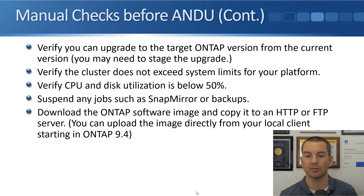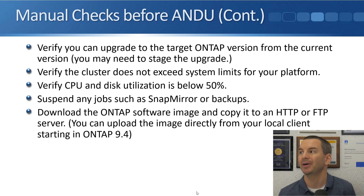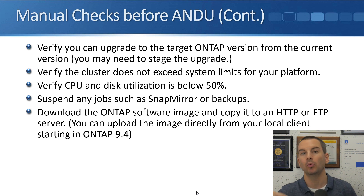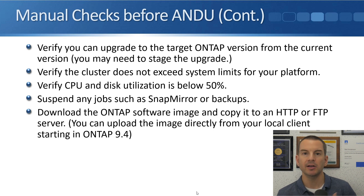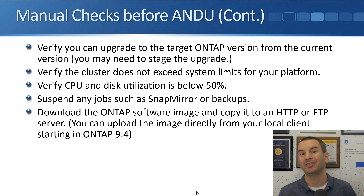Verify the cluster does not exceed system limits for your platform — for example, make sure you don't have too many snapshots. Also verify that the CPU and disk utilization is below 50%. When you do an upgrade it uses high availability because upgrading to a new version requires a reboot. The new version is installed on the node, it reboots, and comes up with the new version. During the upgrade one node will be down, so the other node is taking care of all the storage — doing double the normal work. You don't want CPU or disk utilization above 50% because that would put too much load on the HA partner.